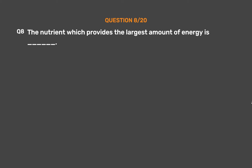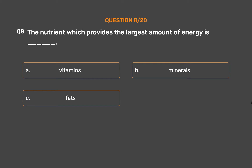Question number 8. The nutrient which provides the largest amount of energy is: Option A - Vitamins, Option B - Minerals, Option C - Fats, Option D - Proteins.